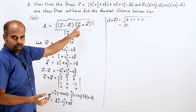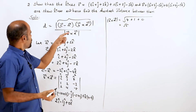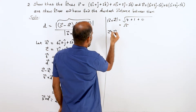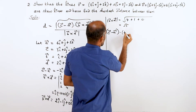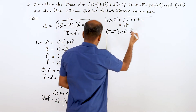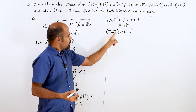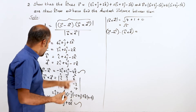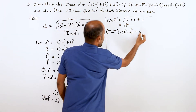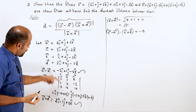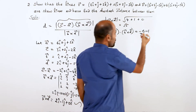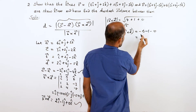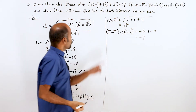Now find the numerator: c vector minus a vector dot b vector cross d vector. Run the coefficients of i cap, j cap, k cap and multiply then add. i cap coefficient of c minus a is minus 3, times i cap coefficient of b cross d which is 2: minus 3 × 2 = minus 6. j cap: plus 1 times minus 1 = minus 1. k cap: minus 4 times 0 = 0. Total: minus 6 minus 1 = minus 7.